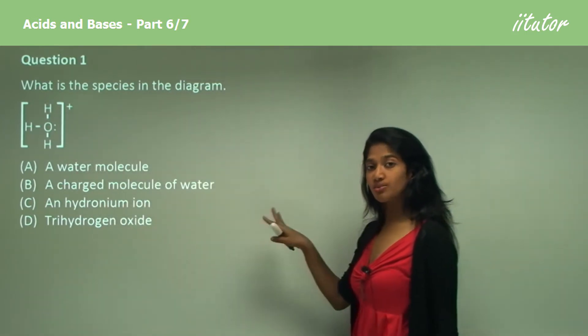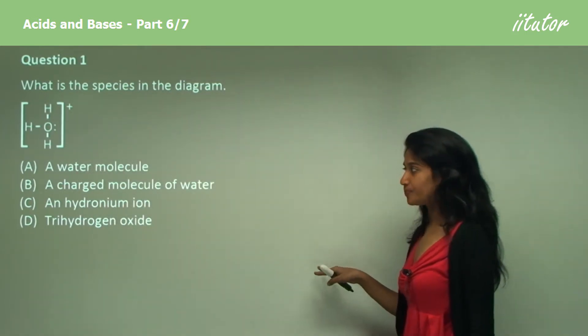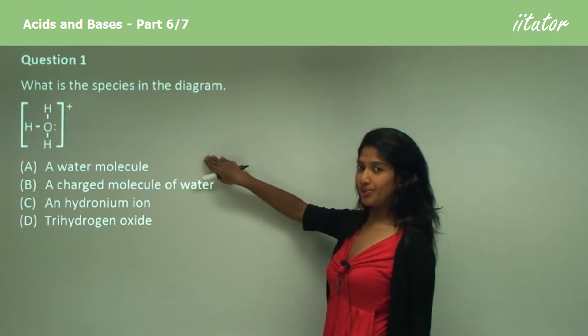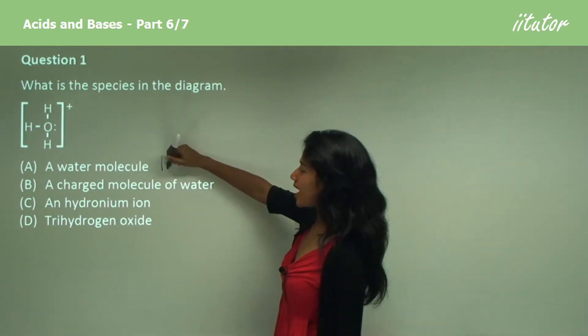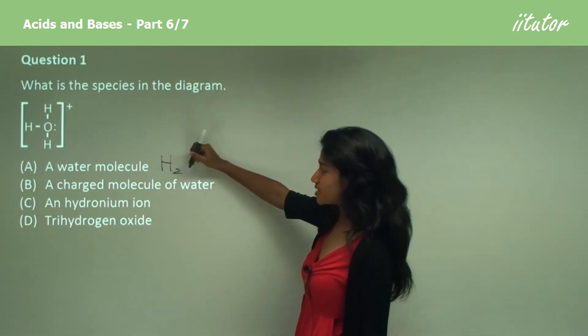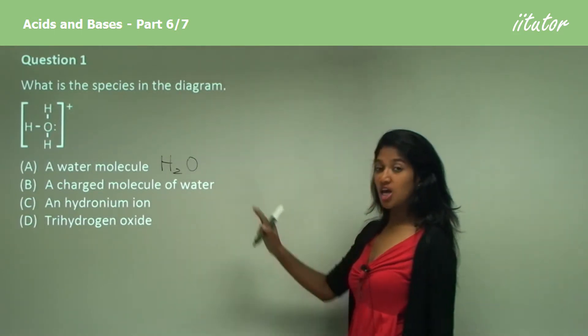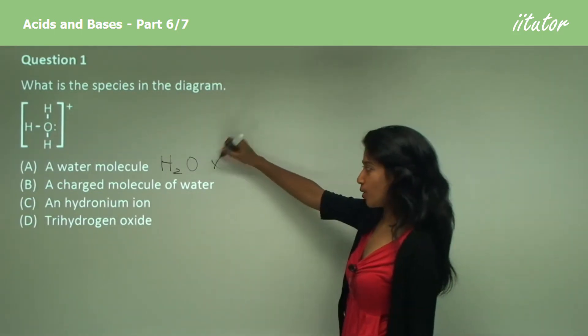So a positively charged molecule is called an ion. Is it a water molecule? No, a water molecule would have two hydrogen atoms and one oxygen atom, so it cannot be a water molecule.